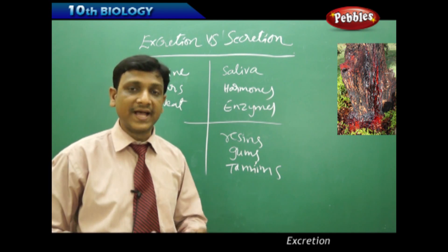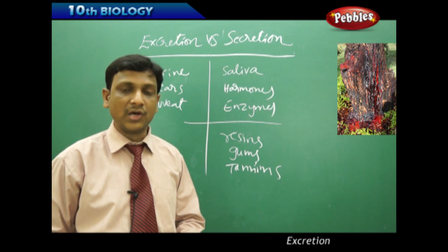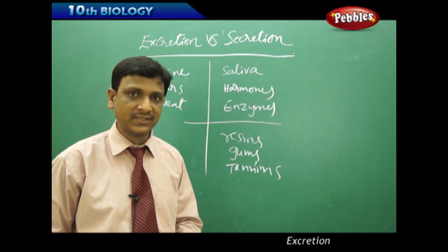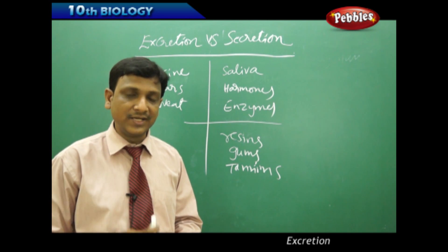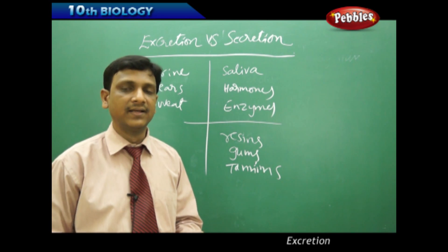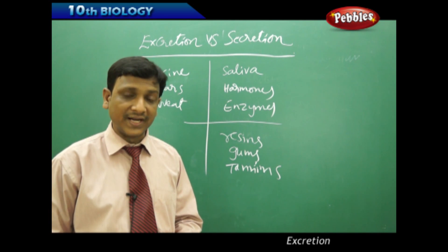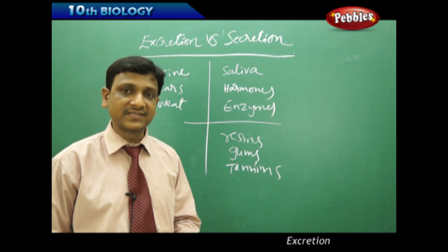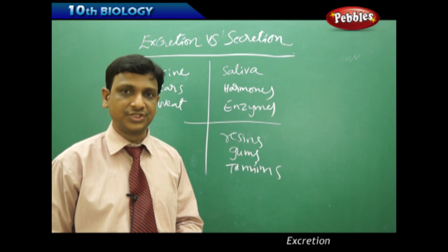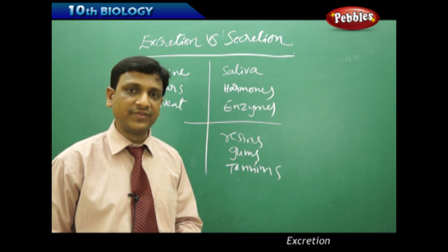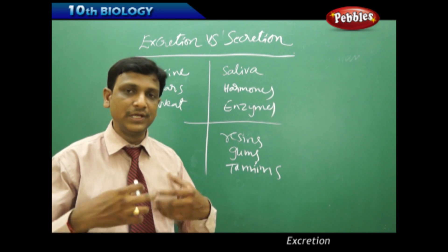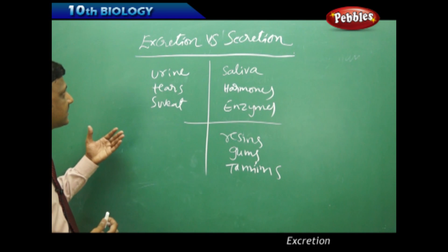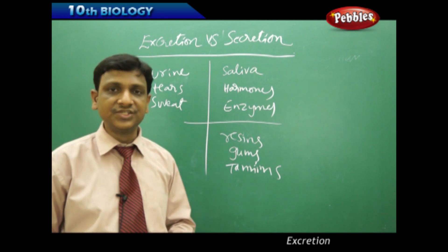In this lesson, we have studied the mechanism of excretion in both animals and plants, the human excretory system in detail — its structure and function — the chief excretory material urine and its composition, and the functioning of the kidneys and what happens in case of kidney failure.